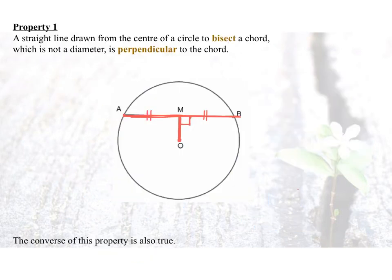To end of this part of the chapter, let us recall the following. Property number 1: a straight line drawn from the center of the circle to bisect a chord is perpendicular to the chord. So if ON bisect AB, we will have a 90 degree angle.